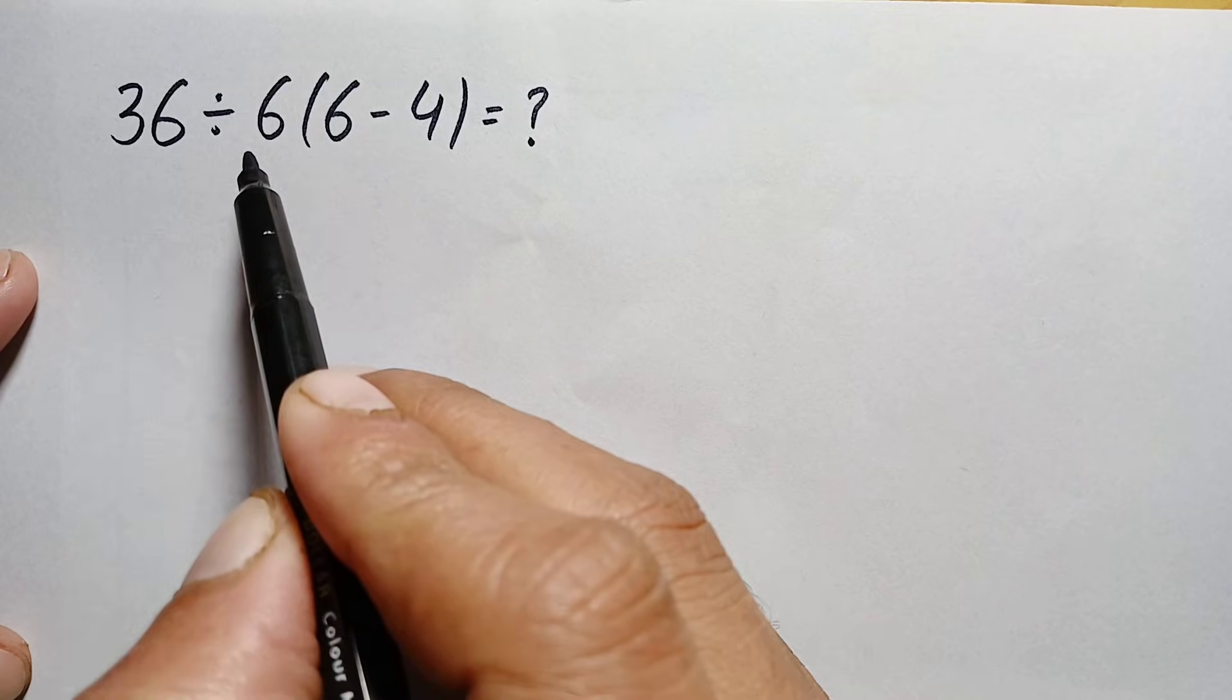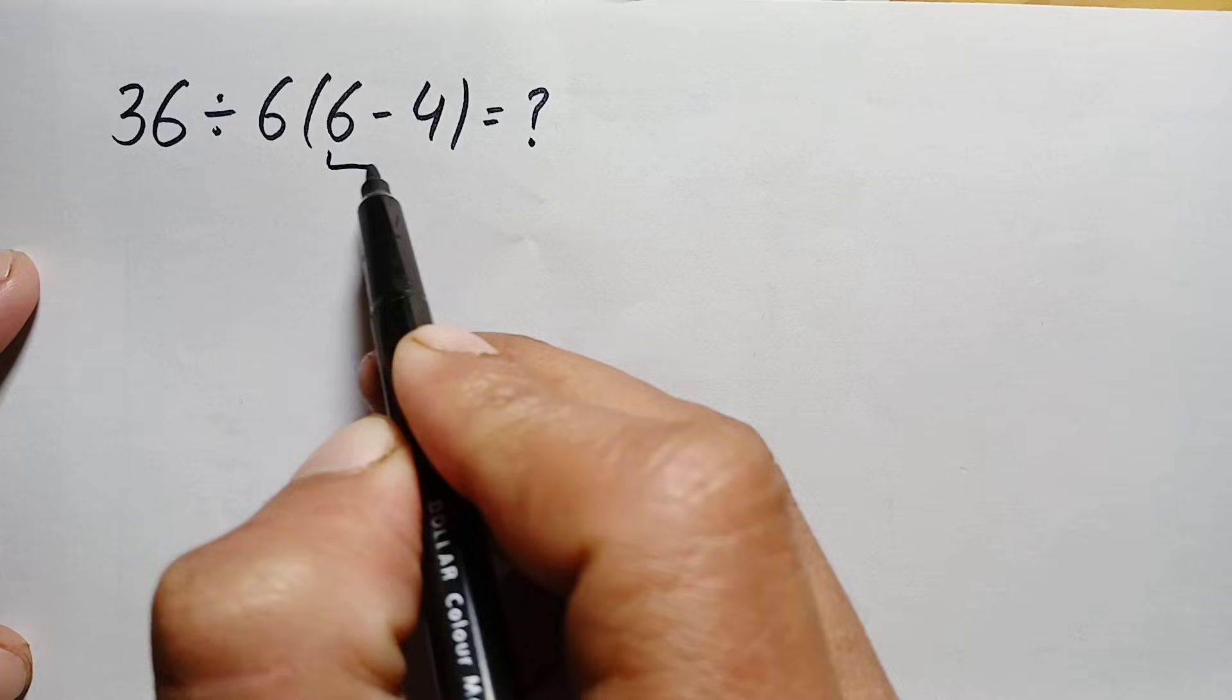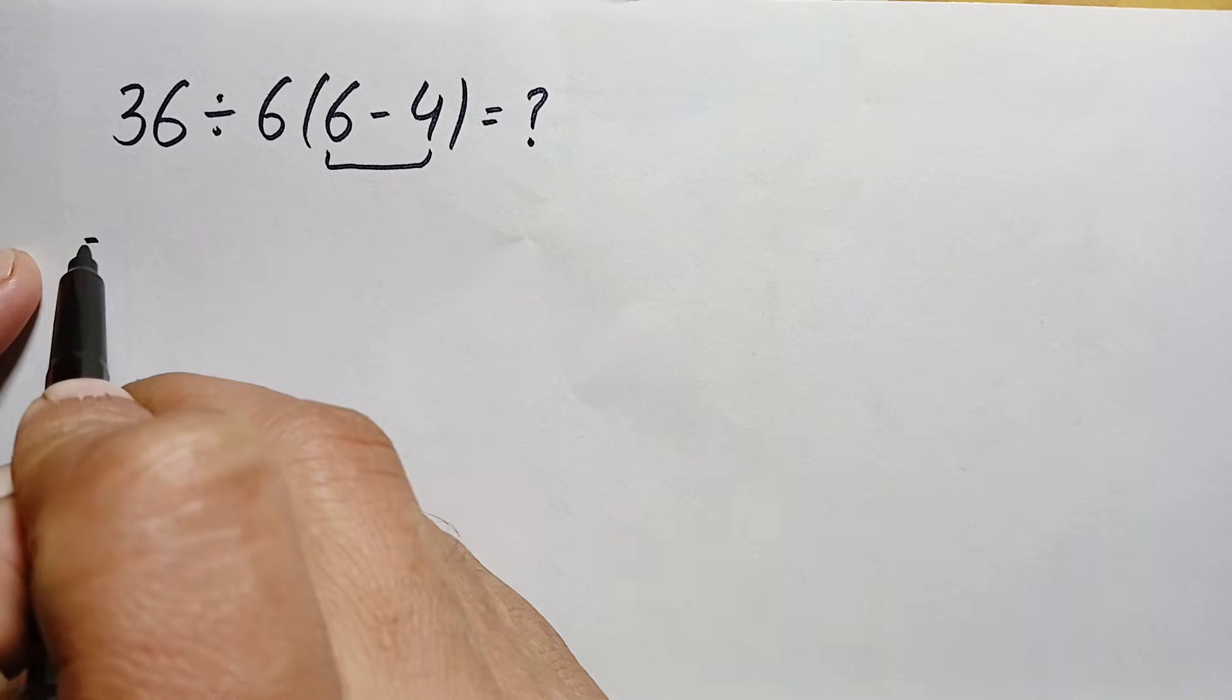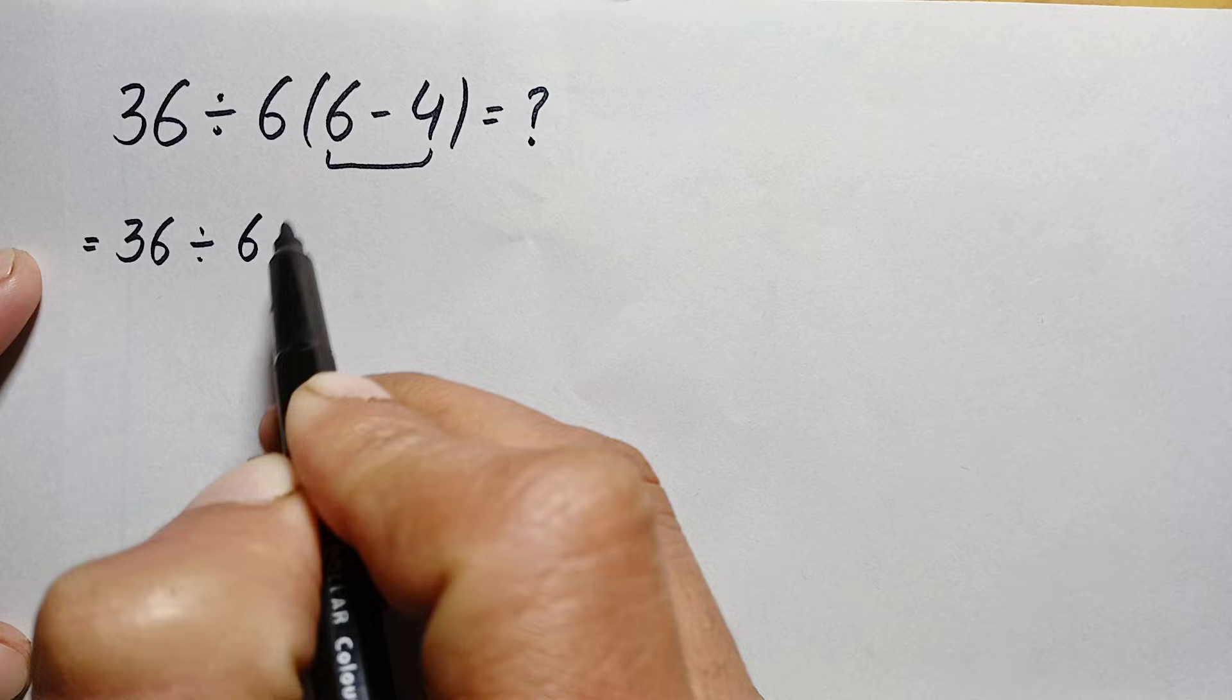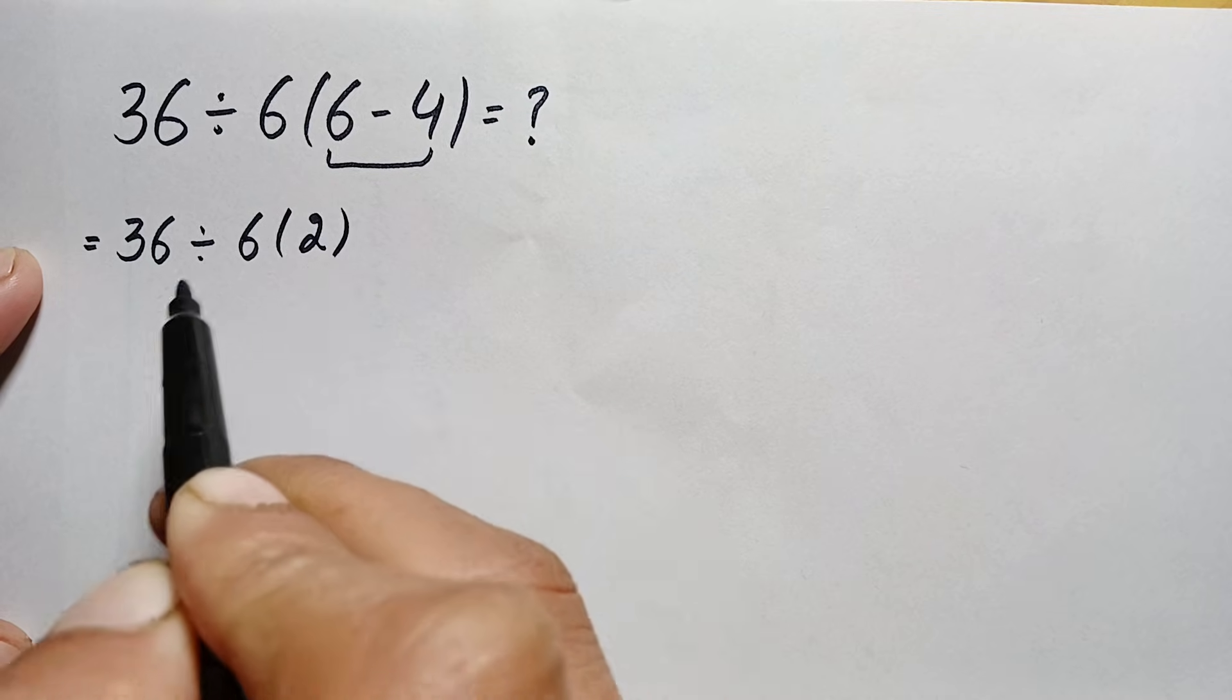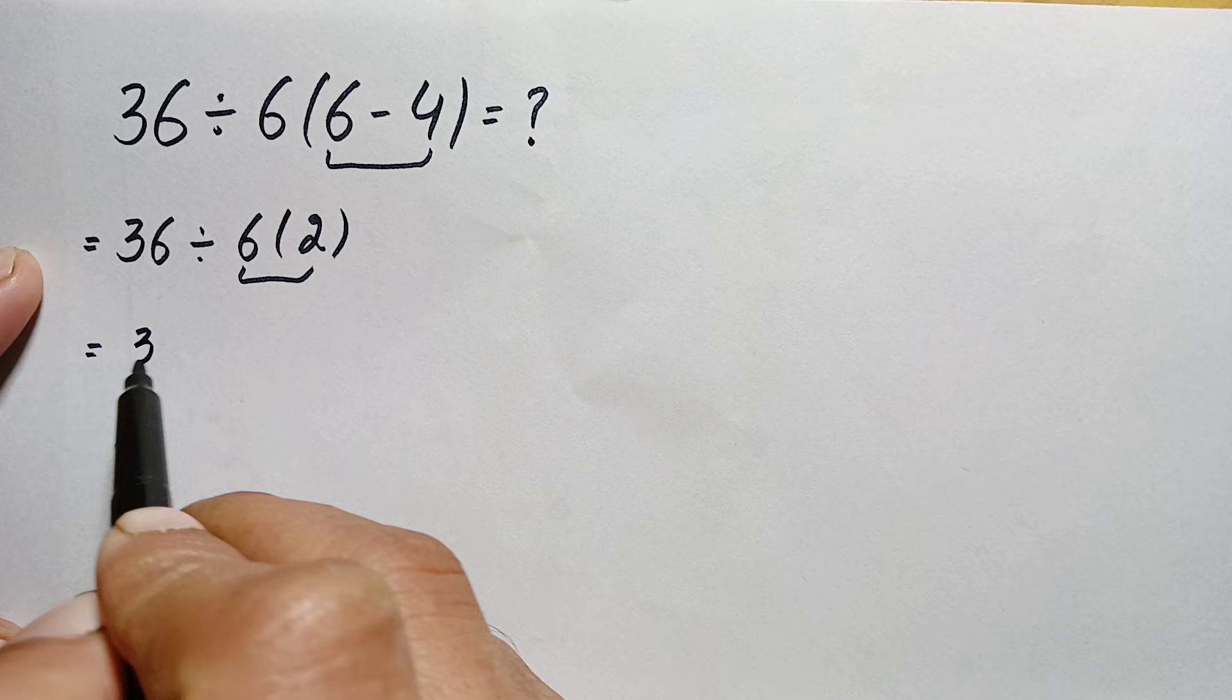What is 36 divided by 6 times 6 minus 4? Here, 6 minus 4 is simply 2, so this is 36 divided by 6 times 2. Now 6 times 2 is simply 12, so this is 36...